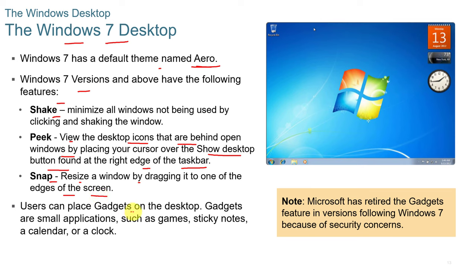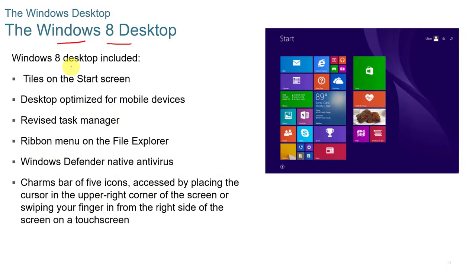Users could also place gadgets on the desktop — small applications such as games, sticky notes, calendar, clock, and weather applications. The Windows 8 desktop included tiles on the start screen, was optimized for mobile devices, and had a revised task manager and charm bar of five icons accessed by placing the cursor in the upper right-hand corner or swiping from the right side of the screen.